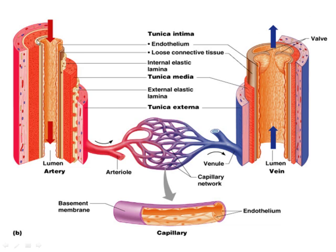Blood flows away from the heart in the arteries, which have a lot of pressure to withstand. The arteries get smaller and smaller to arterioles, into a capillary bed where exchange occurs — we just have one cell layer to move material through. Then the capillaries drain into venules, which drain into veins, which return blood back to the heart.